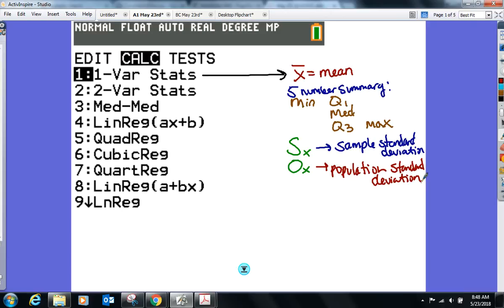Sample standard deviation. And OX? Population. Always use population unless sample is specifically asked in the problem. All right. So those are all the things just under one var stats. All the things under one var stats.